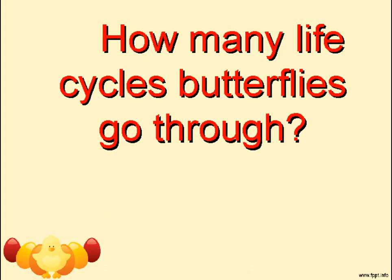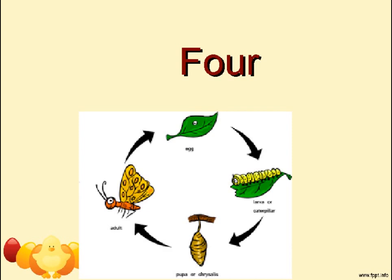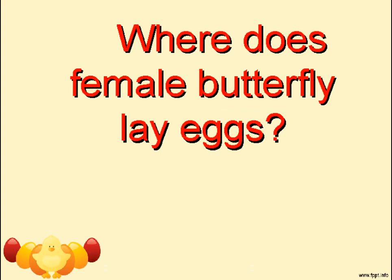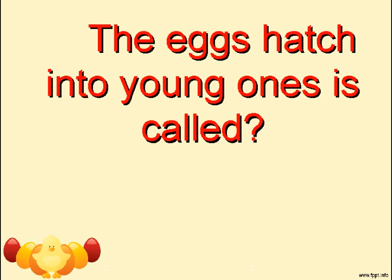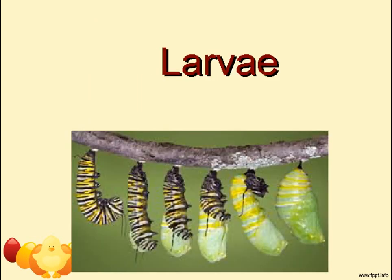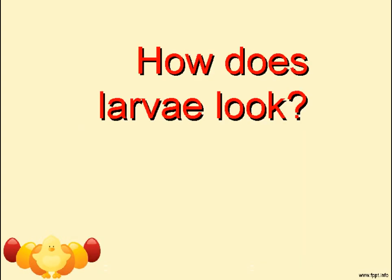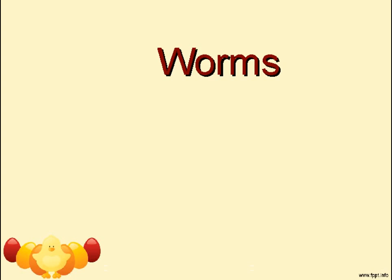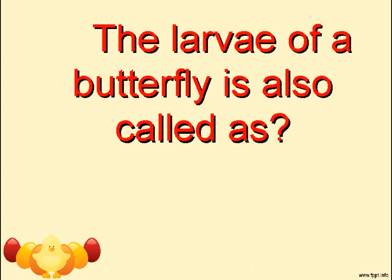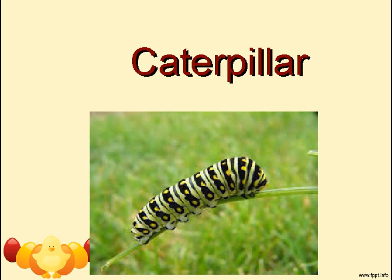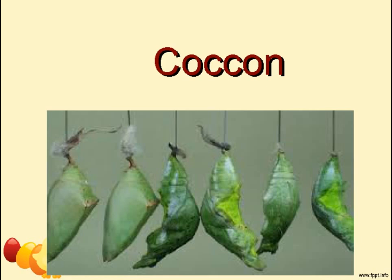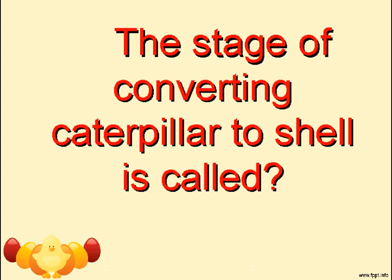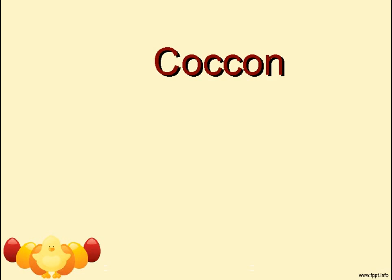How many life cycle stages do butterflies go through? Four. Where does a female butterfly lay eggs? The eggs hatch into young ones called larvae. How does a larva look? Like a worm. The larvae of a butterfly is also called a caterpillar. The shell formed by a caterpillar is called a cocoon. The stage of a caterpillar converting into a cocoon is also called a cocoon stage.